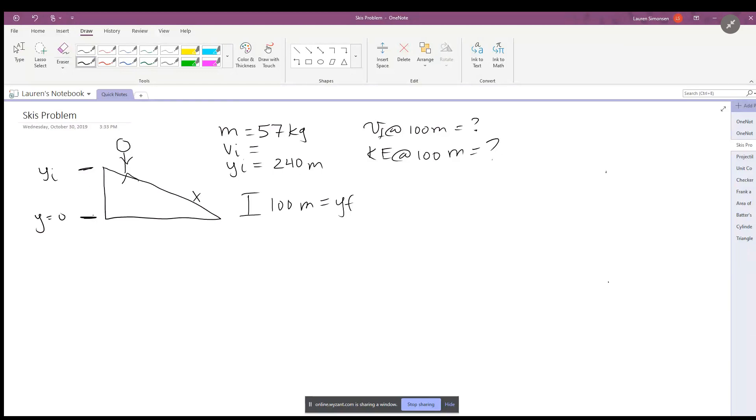Here we have our skier and they are skiing down a hill that is 240 meters high, so that is going to be our y initial. We're going to set y equals zero at the bottom—always define a coordinate system. We're going to say plus is up, positive is up.